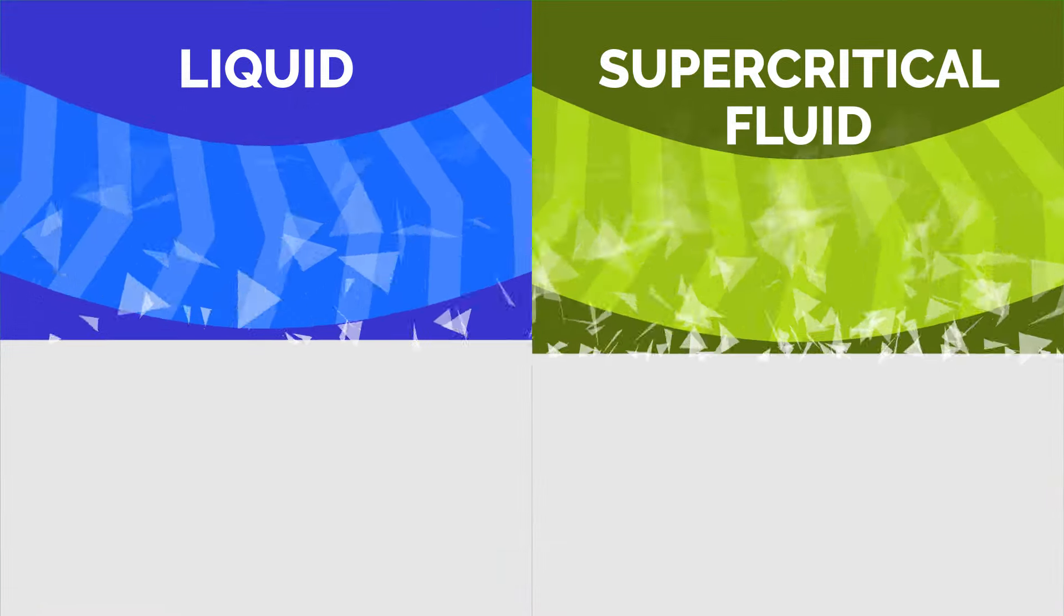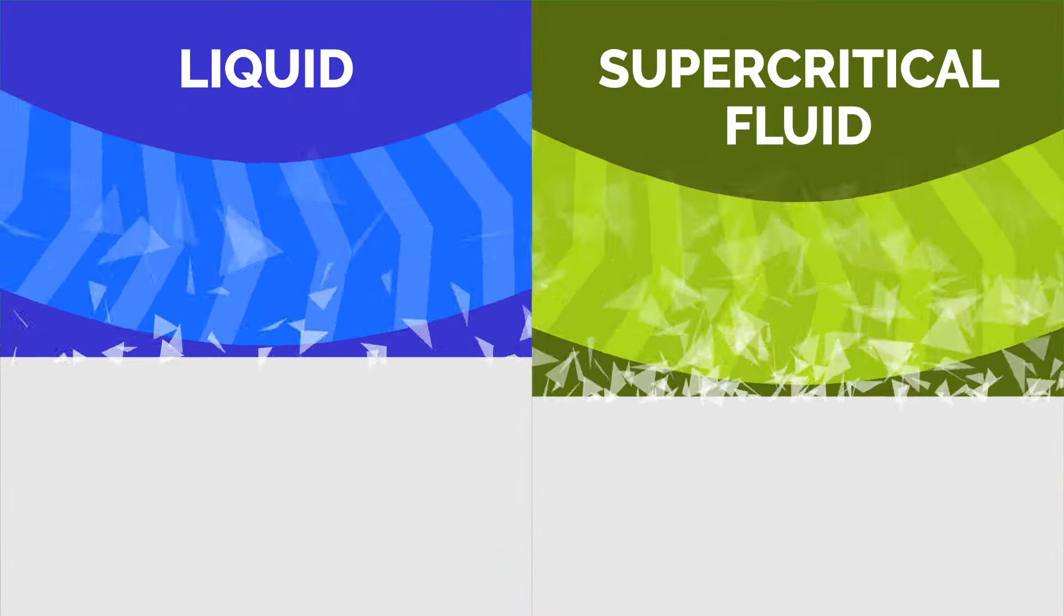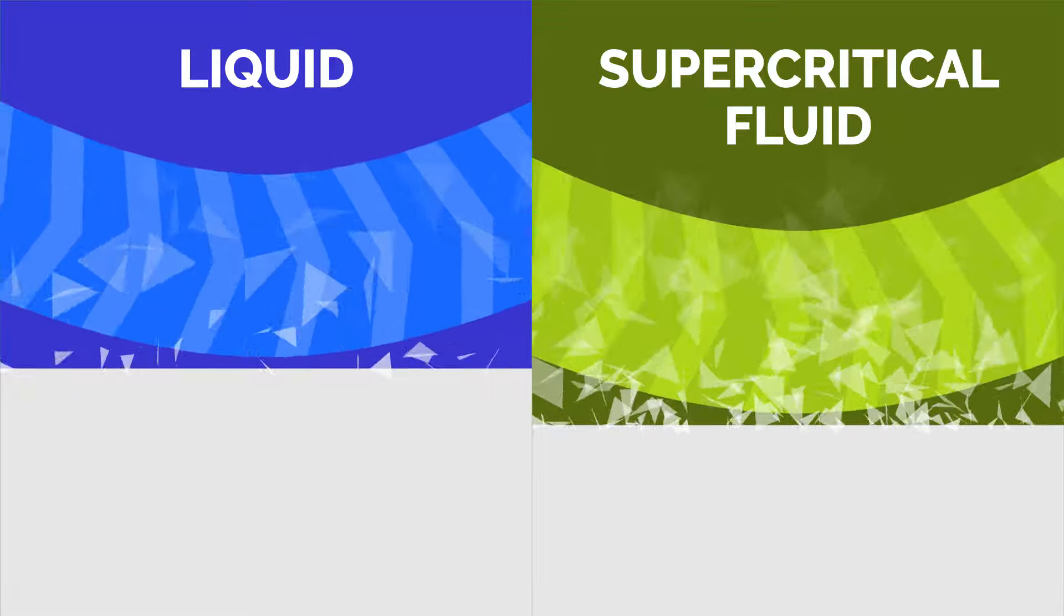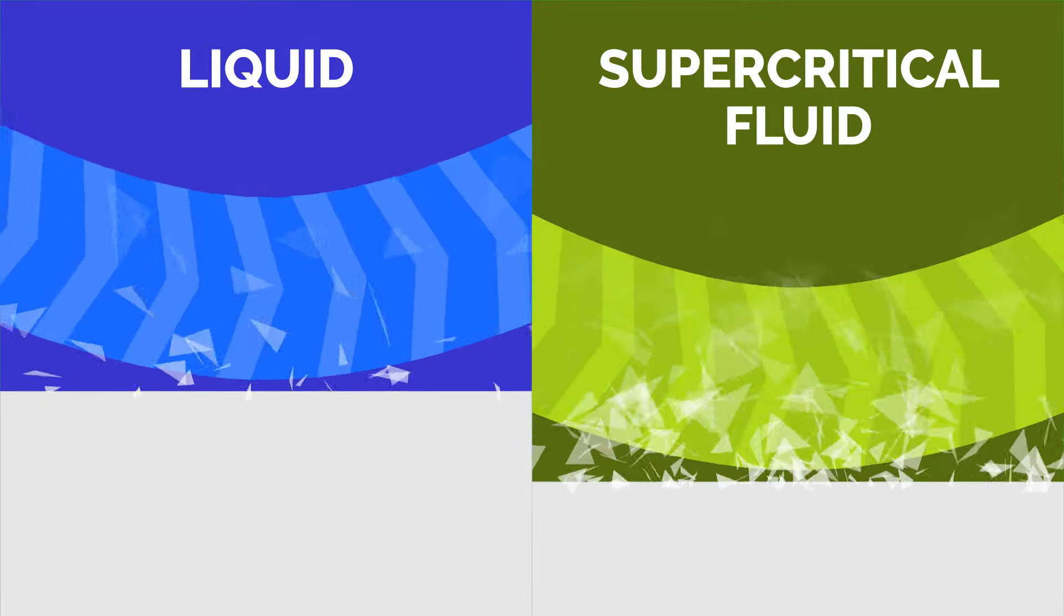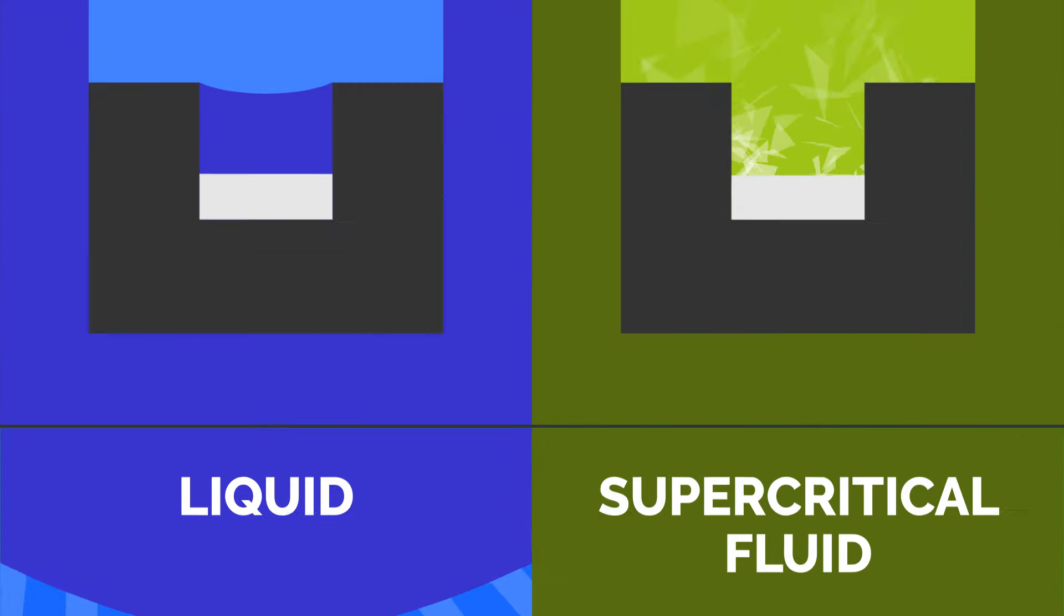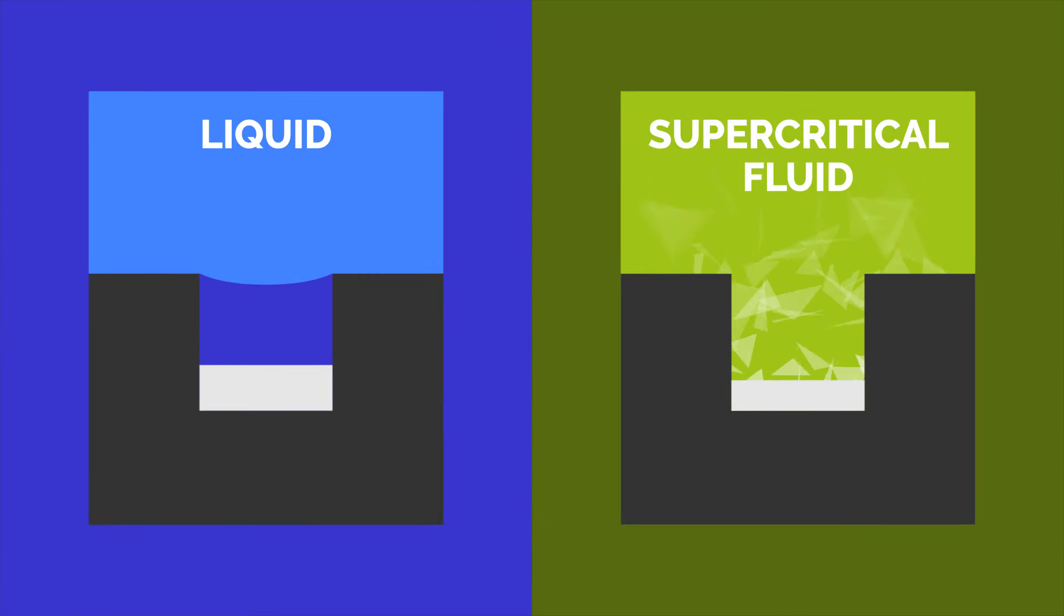Compared to regular liquids, supercritical fluids have the advantage of flowing more easily. This lets them quickly spread dissolved substances to make space for more, meaning they dissolve things faster. Because gas-like supercritical fluids are unaffected by surface tension, they can also get to spots that regular fluids can't get to.